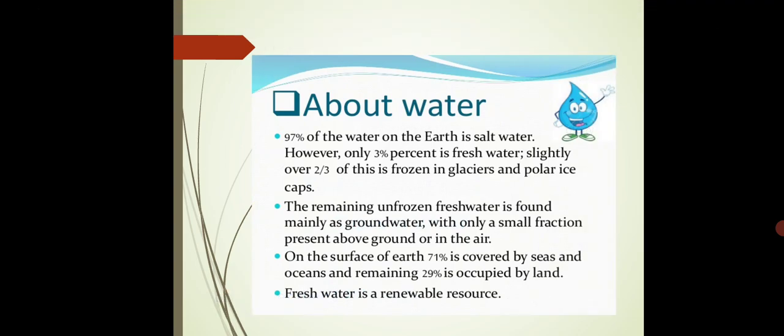The chemical formula for water is H2O. Two molecules of hydrogen and one molecule of oxygen forms the water. Now about 71% of the earth surface is covered by the sea water and ocean water, and remaining 29% is occupied by land.